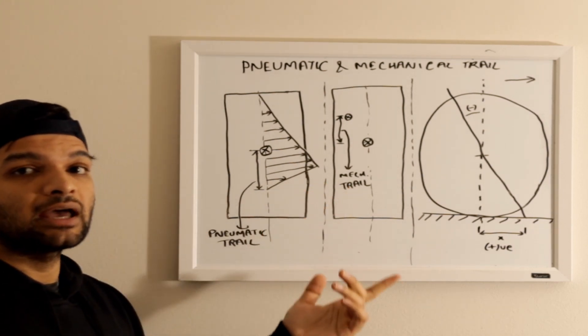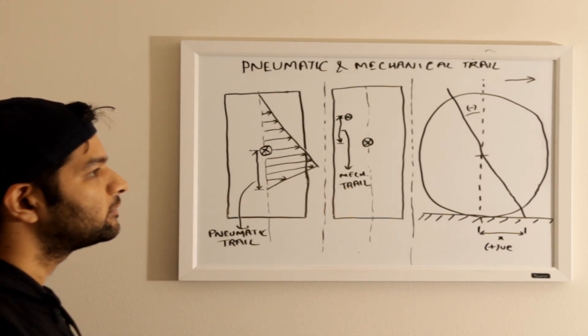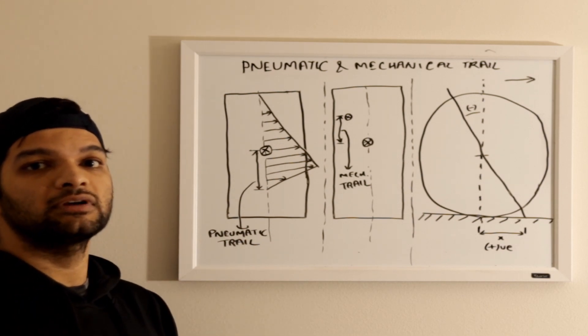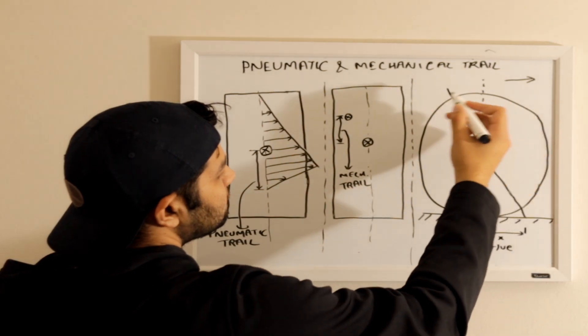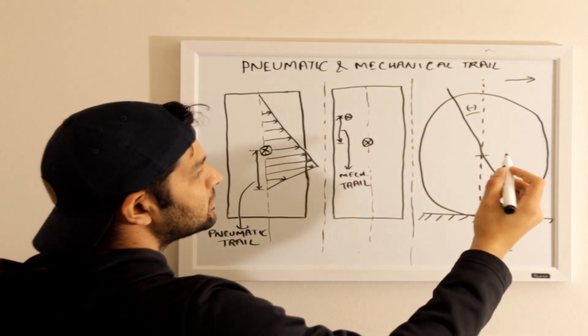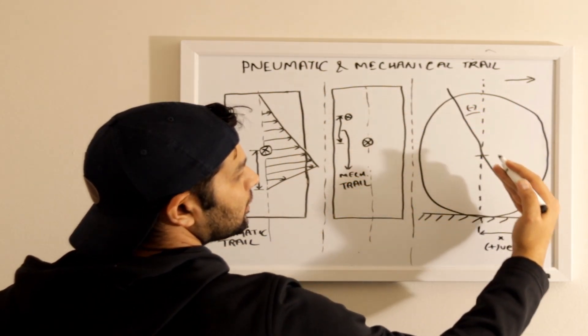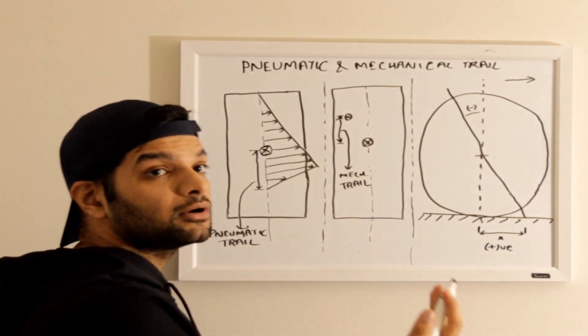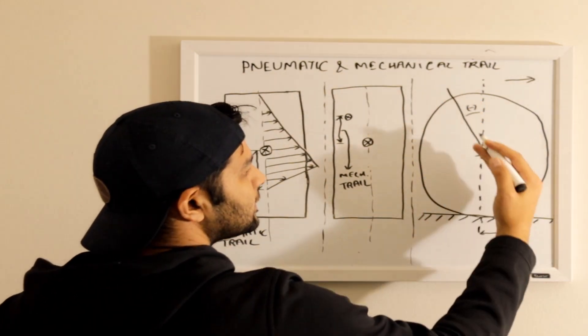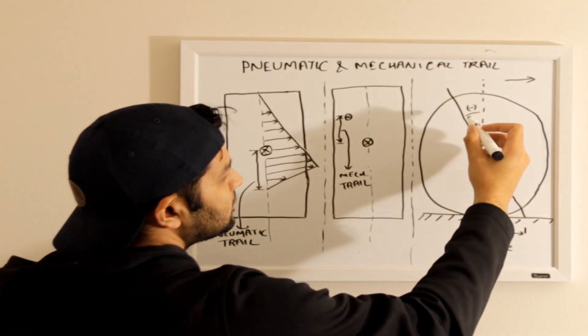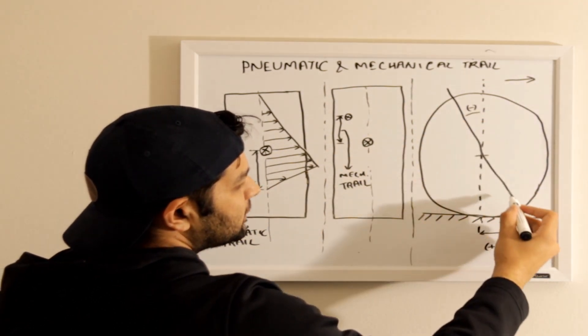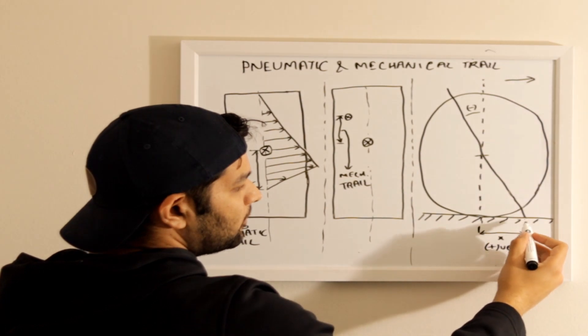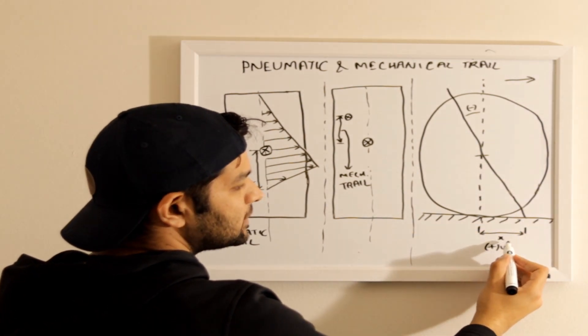Another concept is mechanical trail. So we have caster angle and we have positive trail of caster angle. Assuming this is the wheel and we are moving in that direction, the kingpin will be aligned in this direction. So this angle will be considered negative, and the point of intersection of this line on the road—this distance, if we consider it as x—